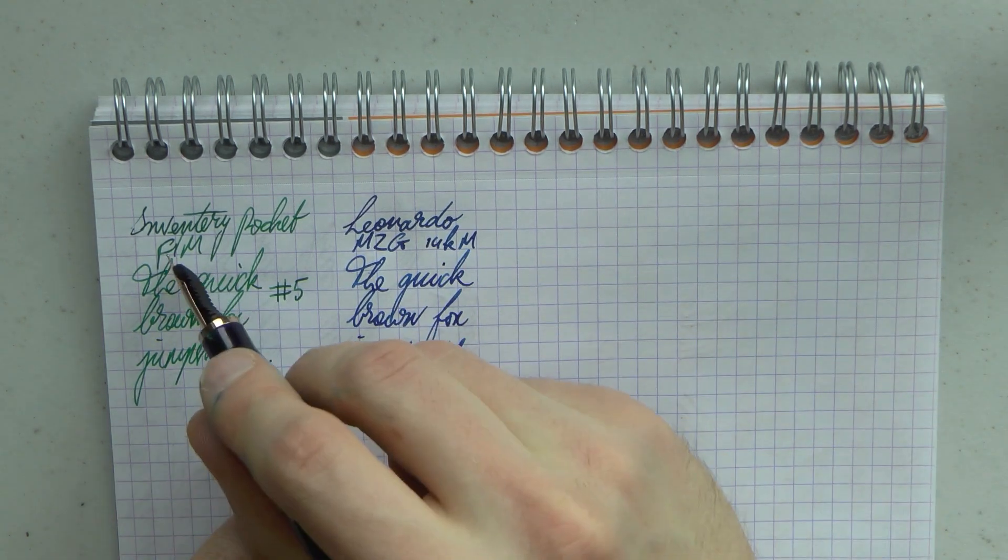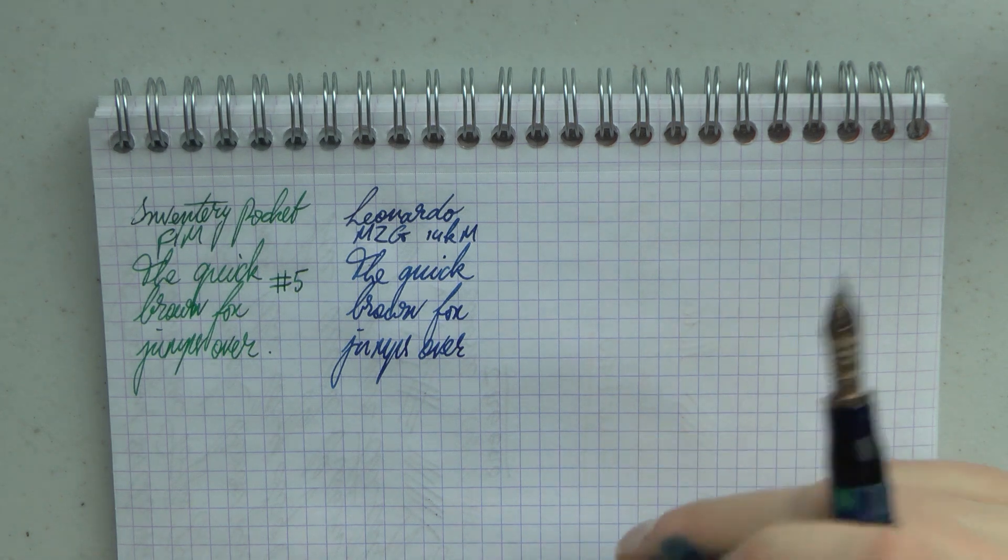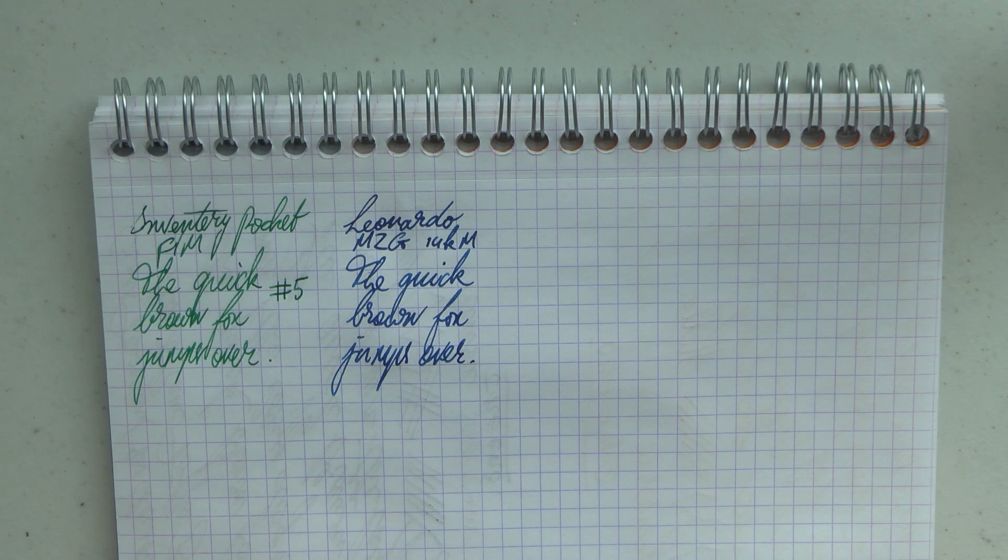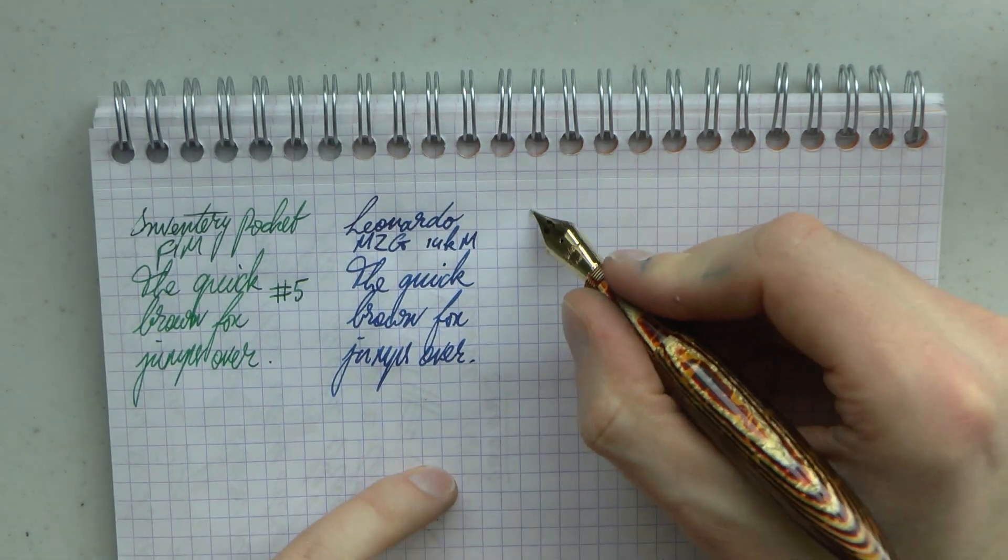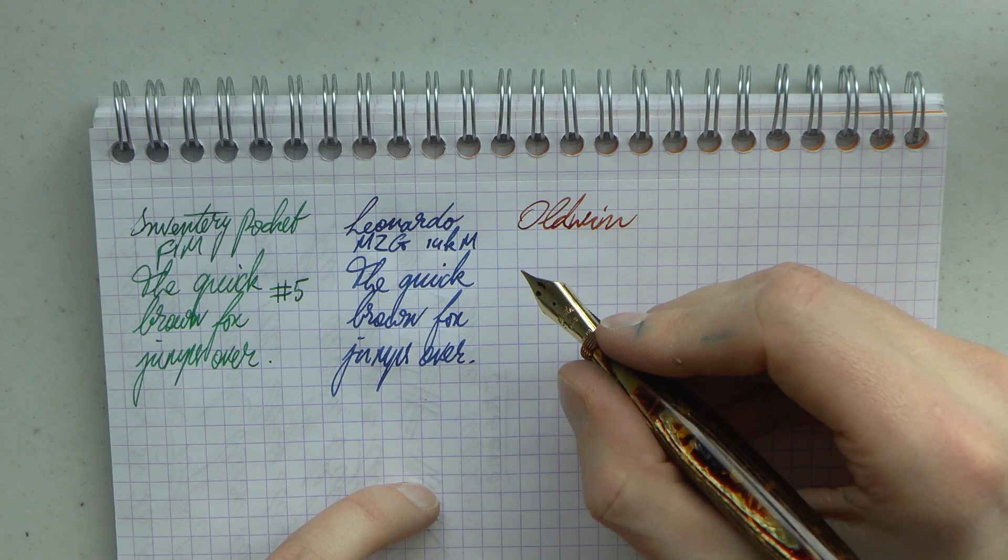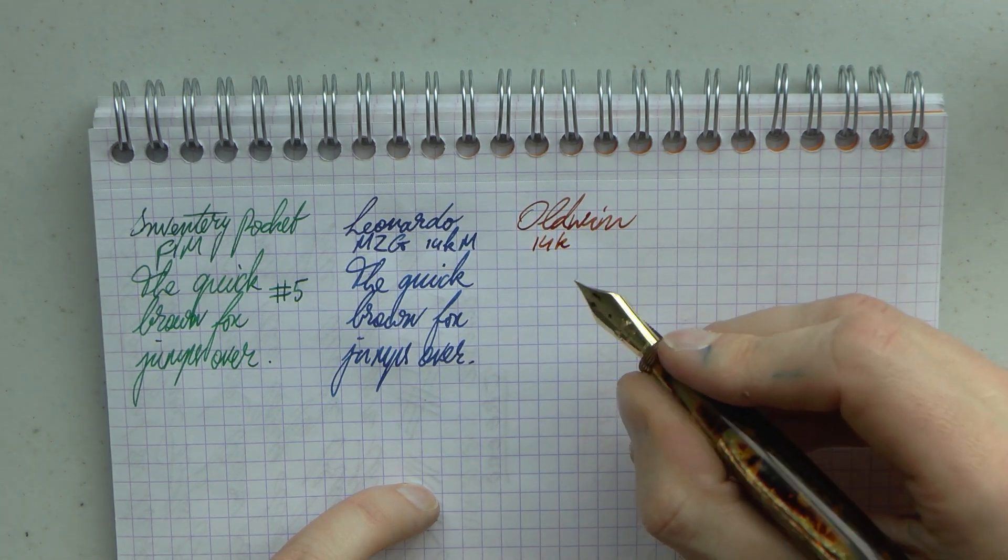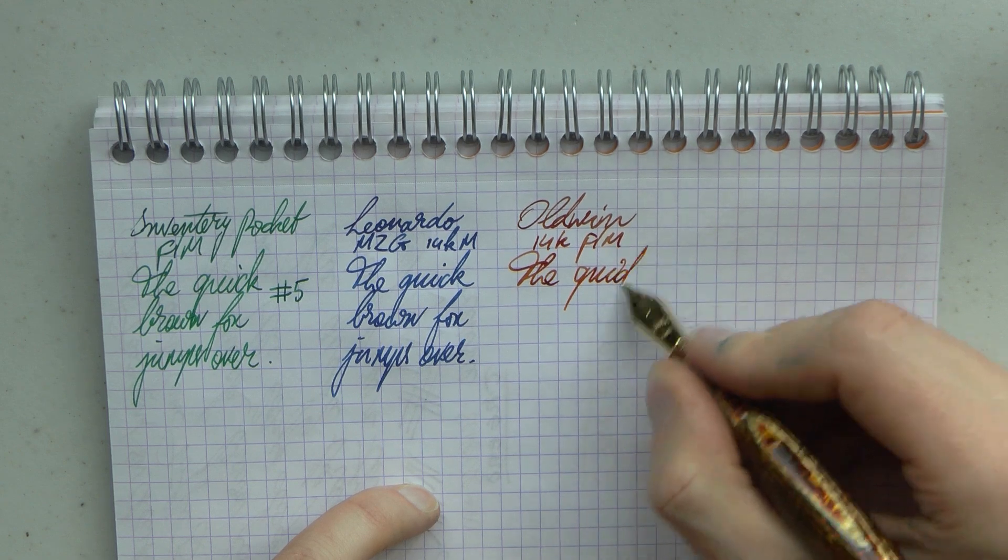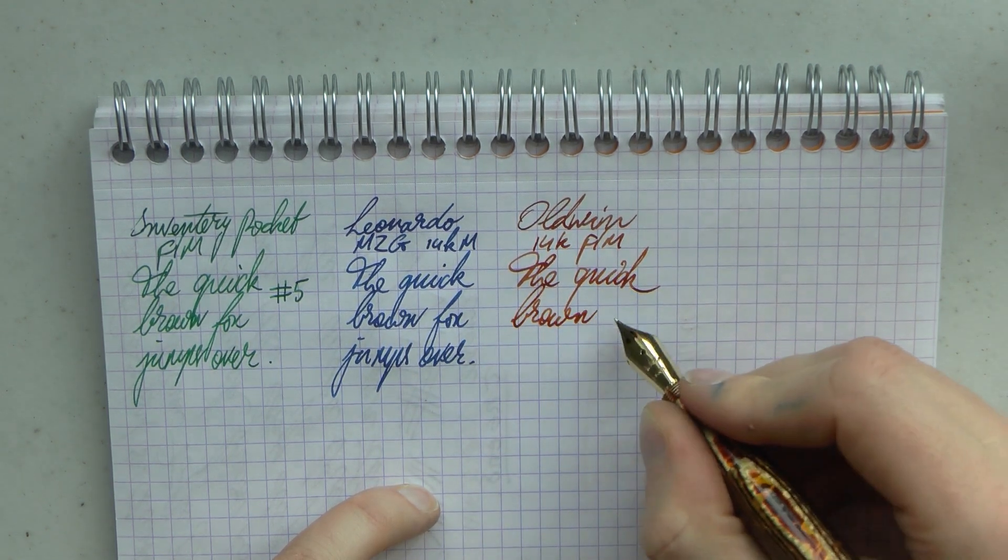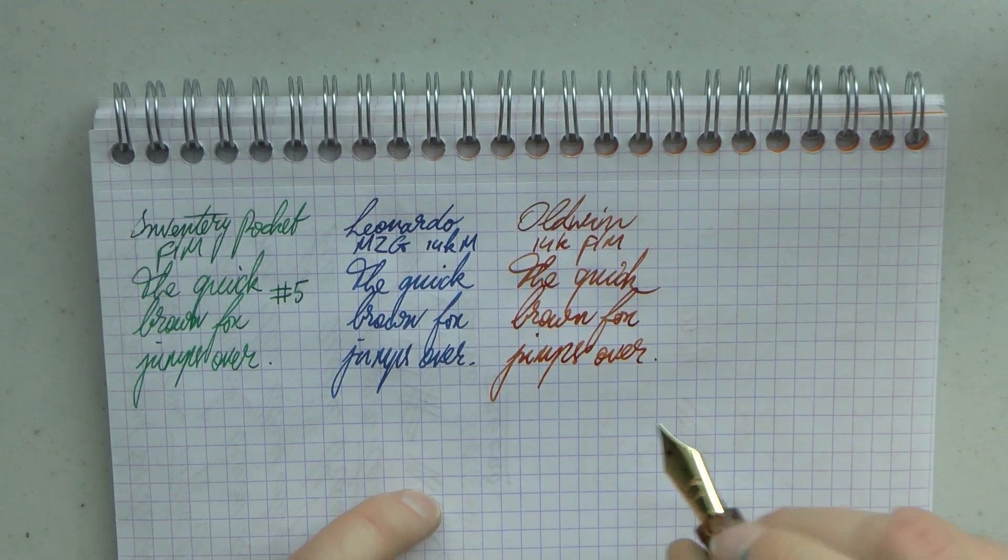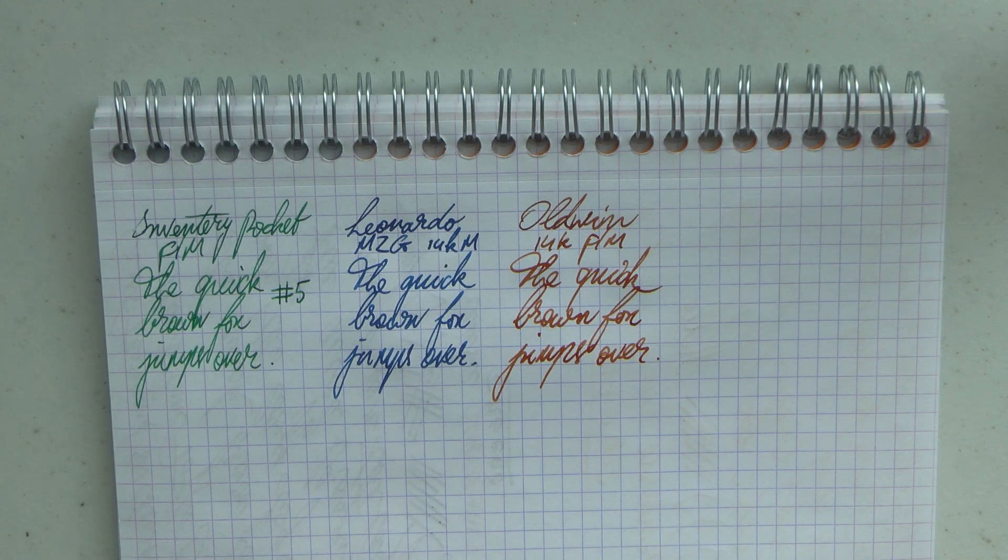I tried to have approximately similar nib grades. So, in other words, fine medium, medium, not a double broad and a triple broad, because I mean, that would make it even worse in comparison. I already have different inks in them. Then I have a number seven nib. That would be the Oldwin Classic. The ink is SBRE brown, and this is a 14K, also I think fine medium. I don't think these get, I think they only are like a one size fits all type approach.